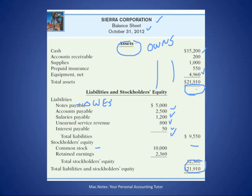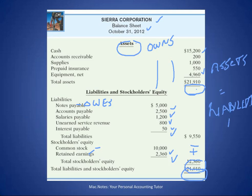The shareholders' equity is the balance, $12,360. That's broken into two parts: common stock, what the shareholders paid for their shares — these shareholders put in $10,000. And retained earnings: they made $2,860 in the first month, gave $500 back to the shareholders, so retained earnings is $2,360. That gives us $12,360. Liabilities plus equity equals $21,910 — that's the balance sheet equation. Assets equal liabilities plus equity.